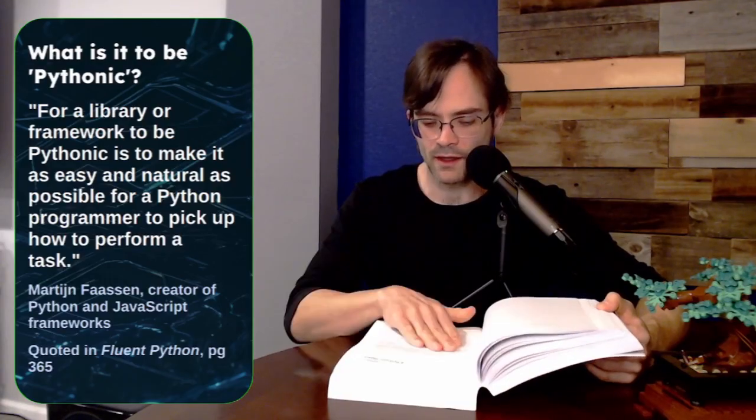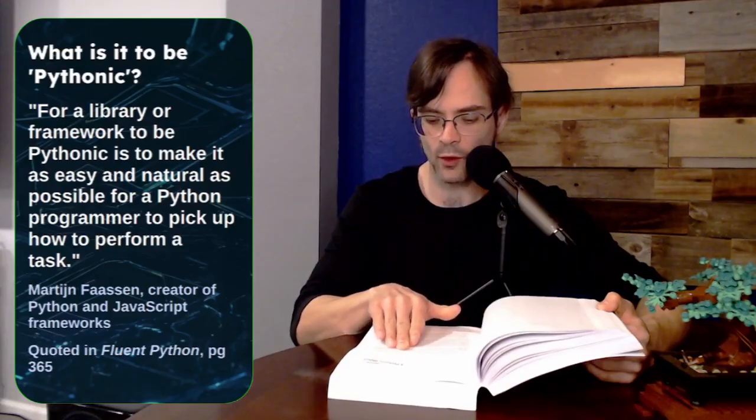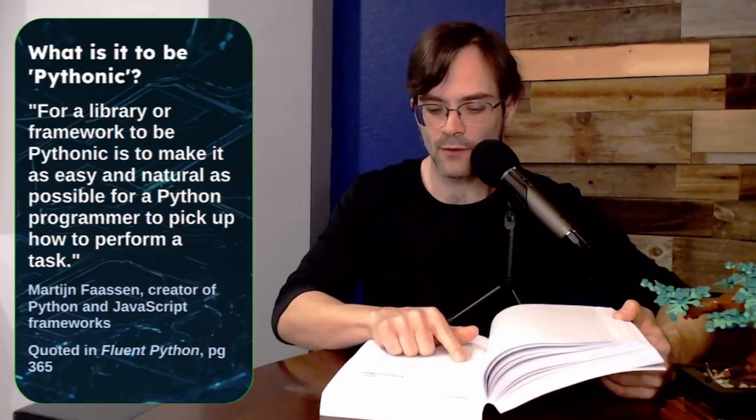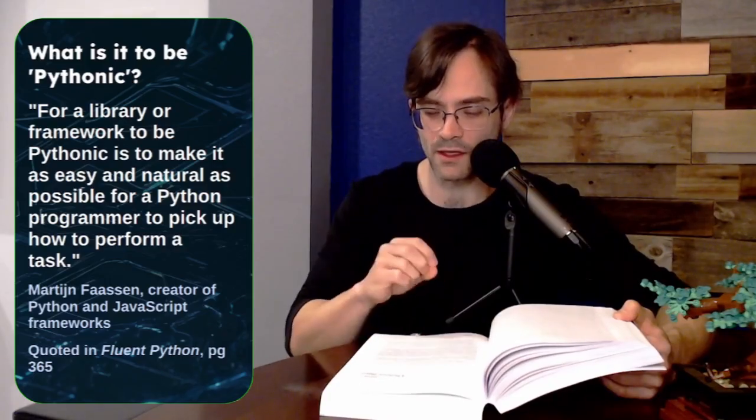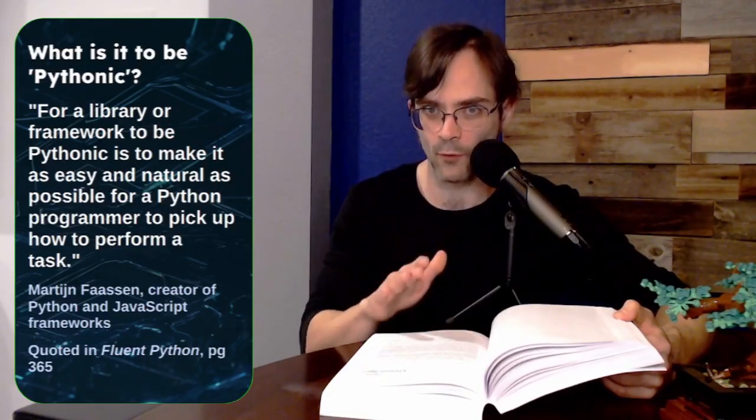So on page 365, we have this great quote about what it is to be Pythonic. Now, Pythonic is hard to define, but this gets pretty close to capturing it. So this quote is from Martin Fashen, creator of Python and JavaScript Frameworks, and he says this is what it is to be Pythonic. For a library or framework to be Pythonic is to make it as easy and natural as possible for a Python programmer to pick up how to perform a task.